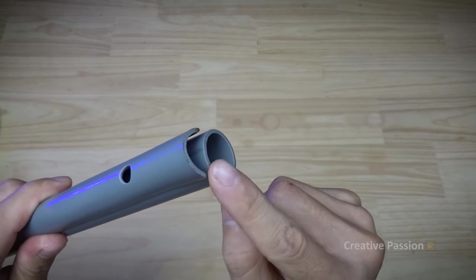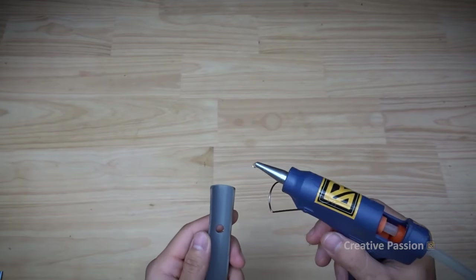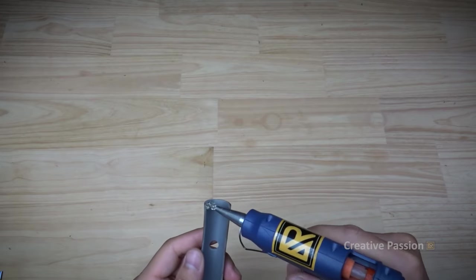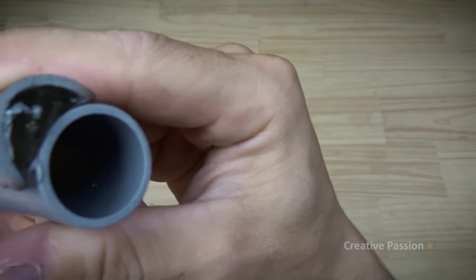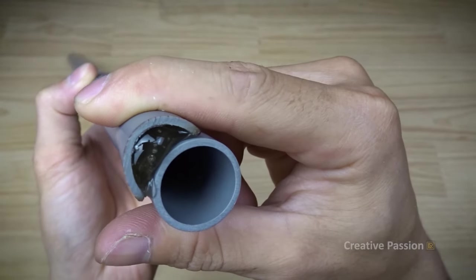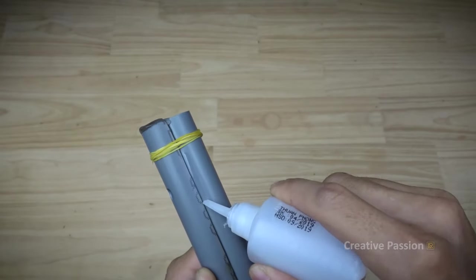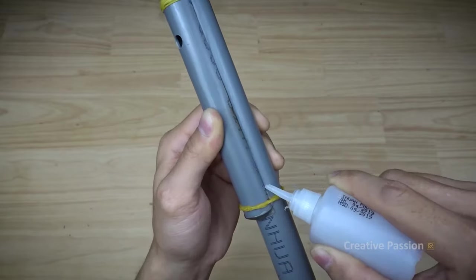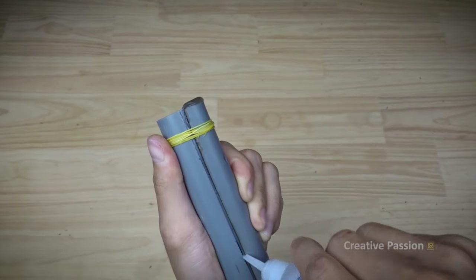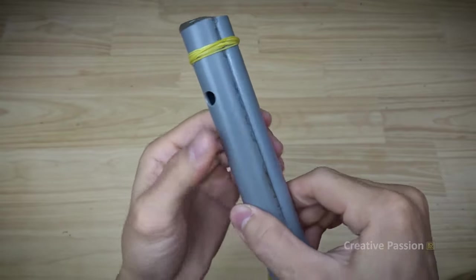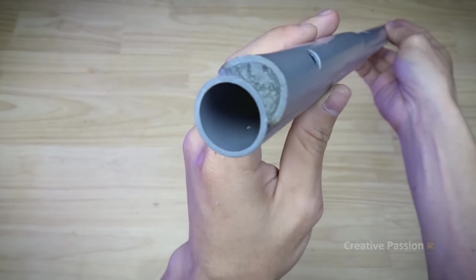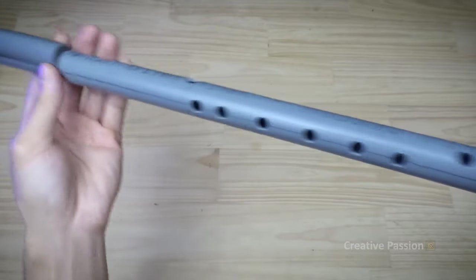I will seal both ends tightly. I will use tape. Note that we must seal tightly so air cannot escape. Okay, so the reed section is done.